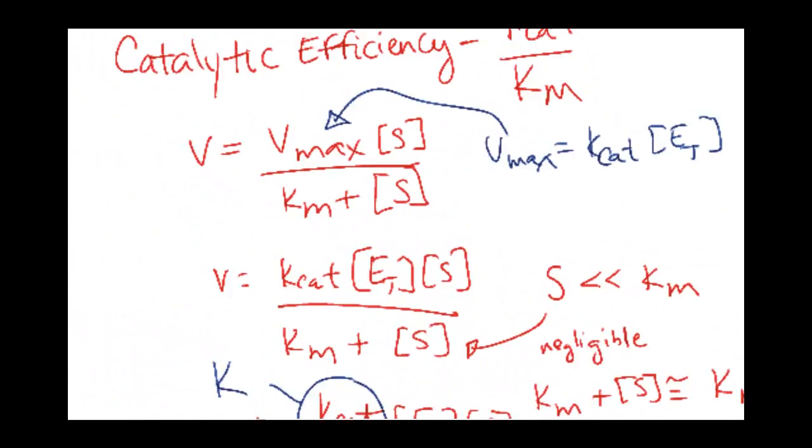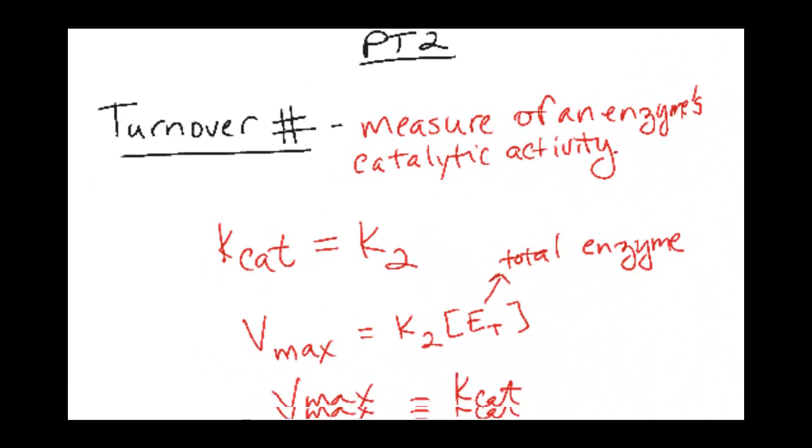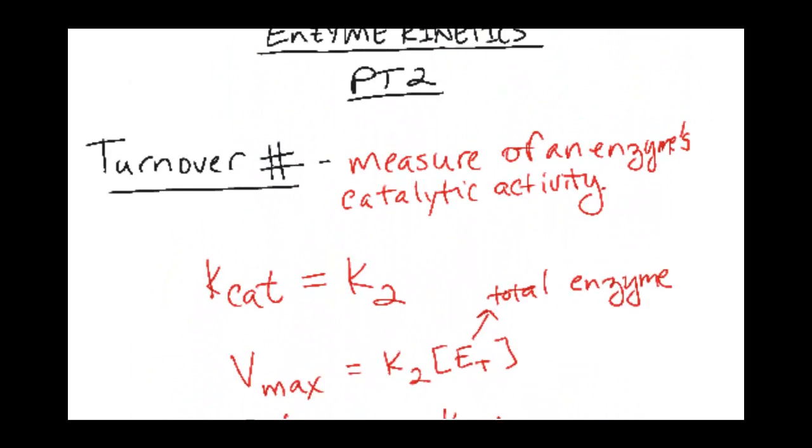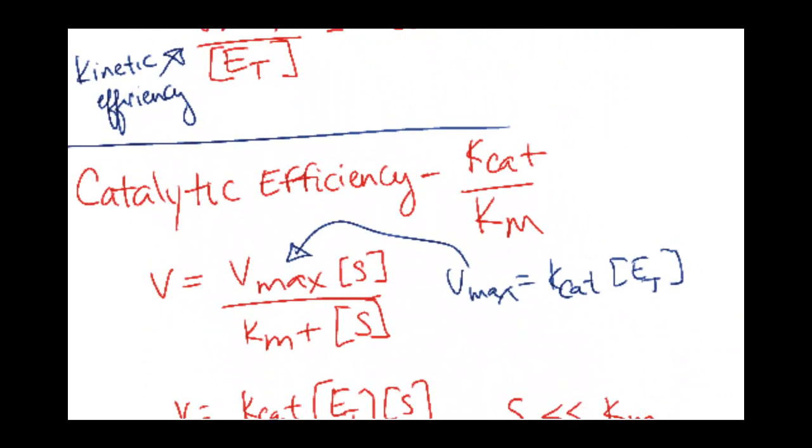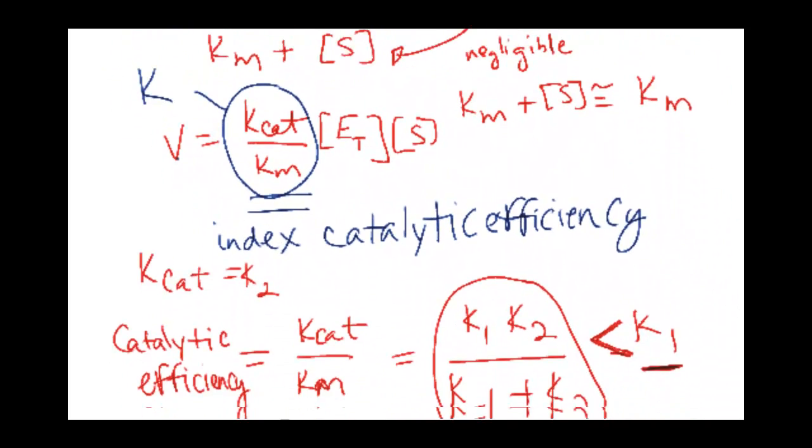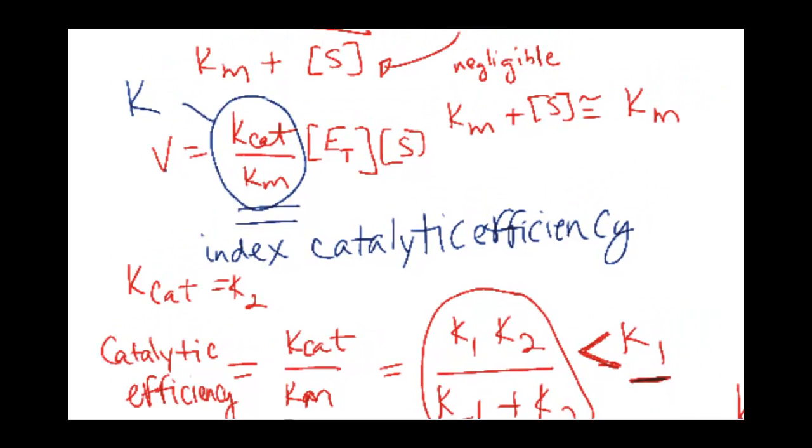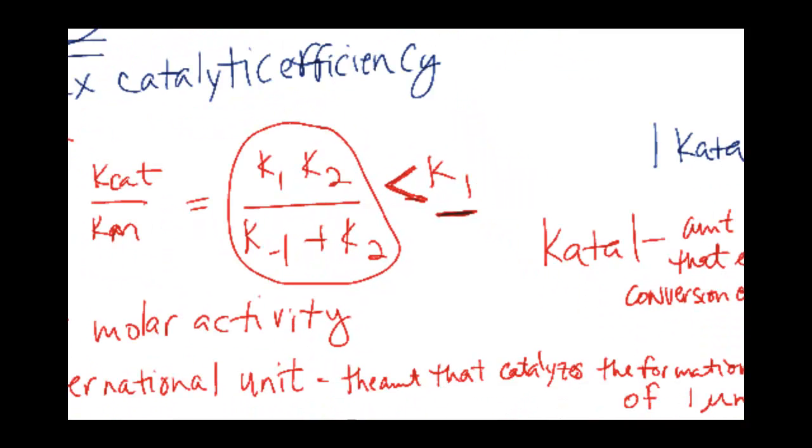So that's a brief rundown on the concepts of turnover number, measures of kinetic activity, basically k2. And then the ratio of k-cat to Km being the catalytic activity. Make sure you know how to calculate both and what they stand for. Hope this has clarified things, and make sure you check out the example videos for some calculations dealing with these things.